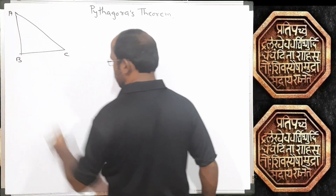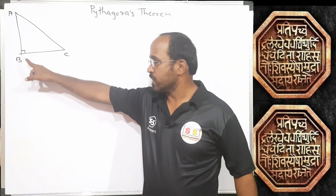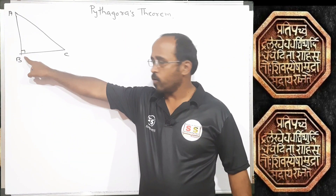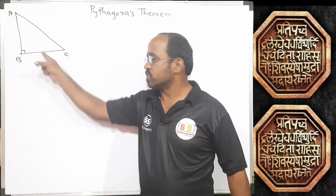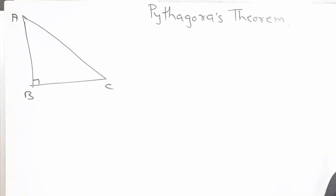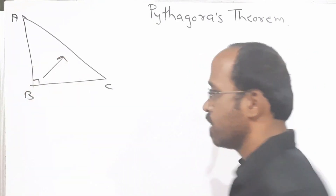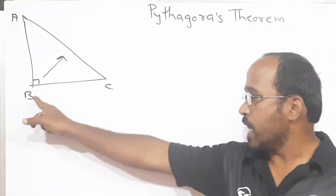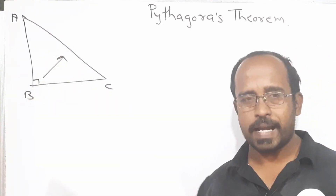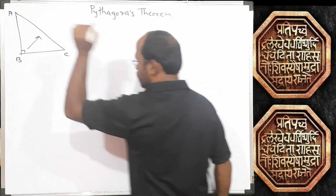Consider triangle ABC. Suppose angle B is 90 degrees — this is the symbol of 90 degrees — then such a triangle ABC is called a right angle triangle. In any right angle triangle, the side which is opposite to the right angle is called the hypotenuse.